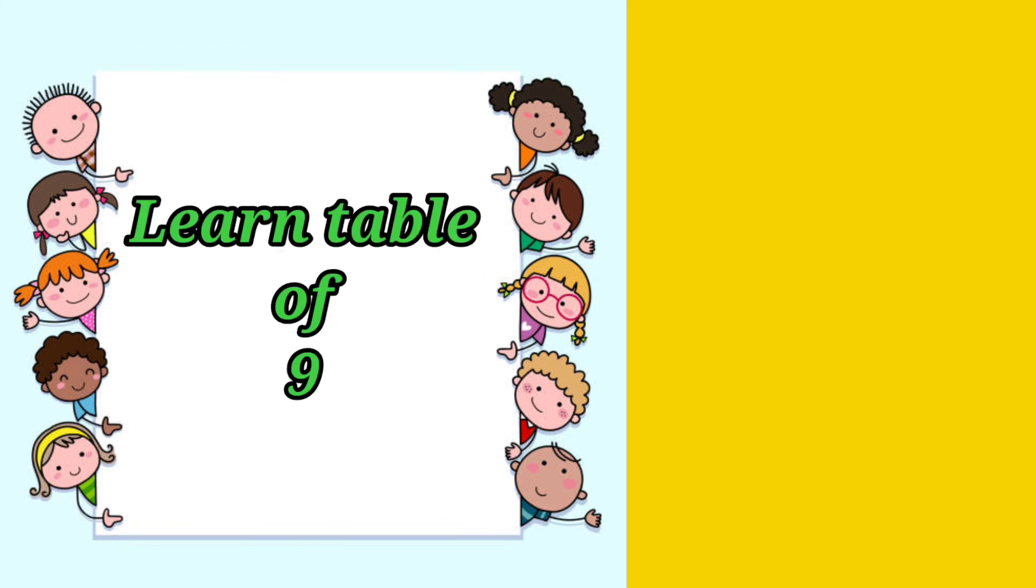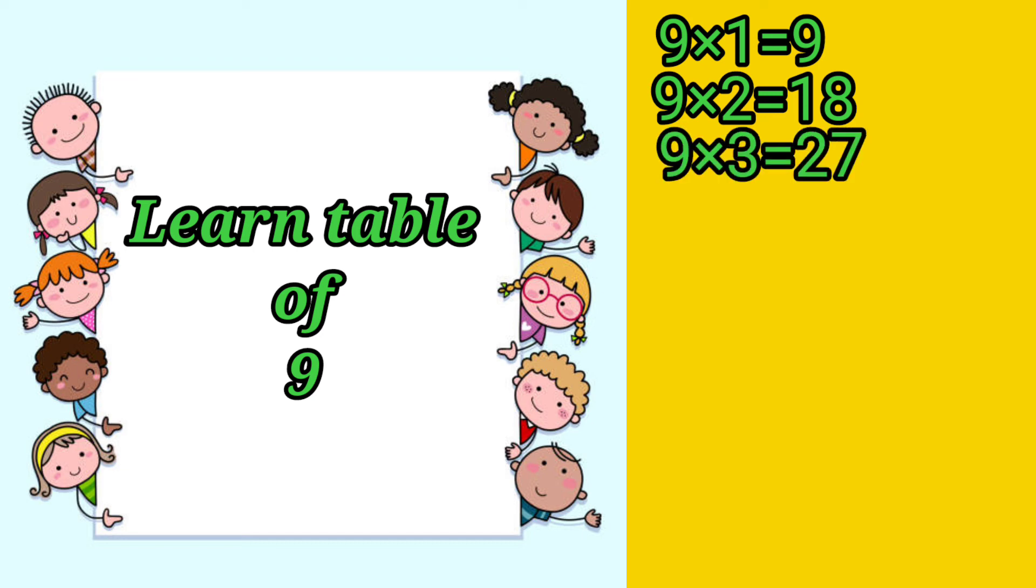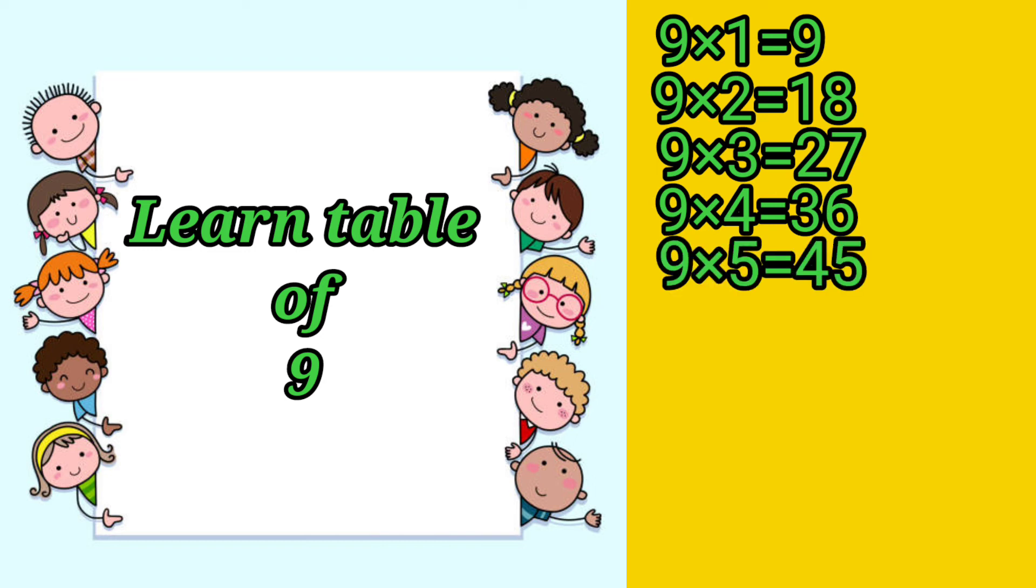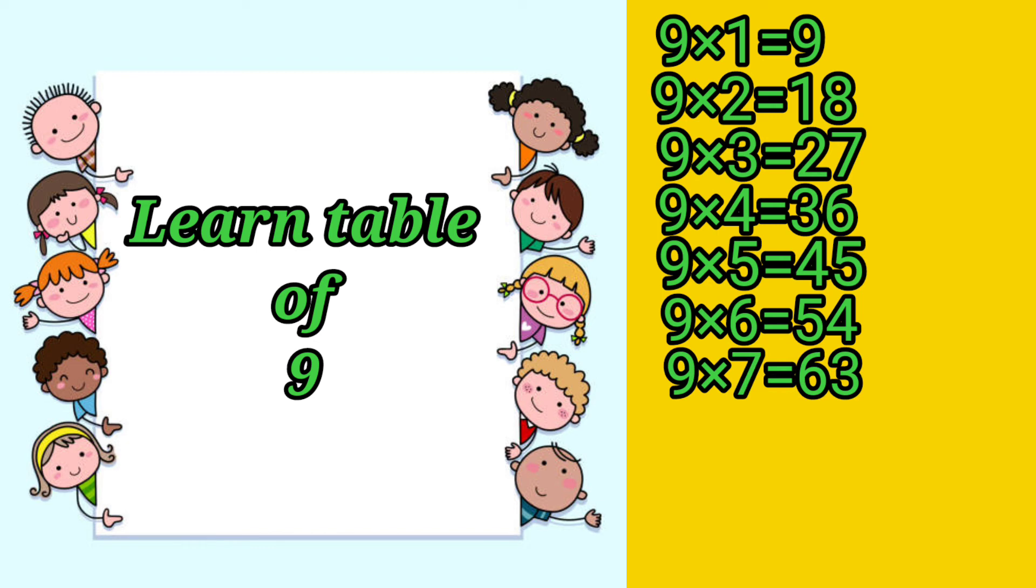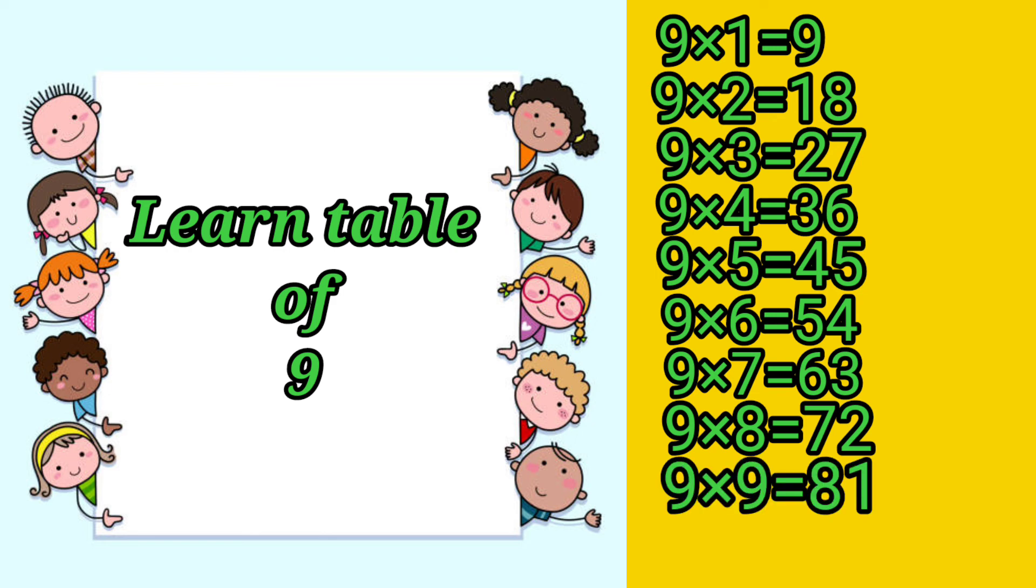Learn table of 9. 9 1s are 9. 9 2s are 18. 9 3s are 27. 9 4s are 36. 9 5s are 45. 9 6s are 54. 9 7s are 63. 9 8s are 72. 9 9s are 81. 9 10s are 90.